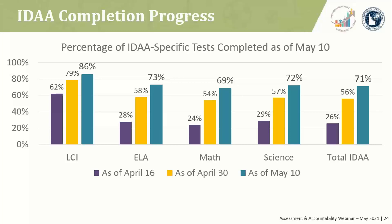Here is a graph adding data as of May 10th. Teachers have completed the Learner Characteristics Inventory (LCI) for 86% of students coded for the alternate assessment in TIDE. 73% of students coded for the alternate assessment have completed their ELA alternate assessment. 69% have completed their math assessment. 72% have completed their science. A total of 71% of Idaho alternate assessments have been completed based on the number of students coded for the alternate assessment in TIDE. Schools are making good progress.